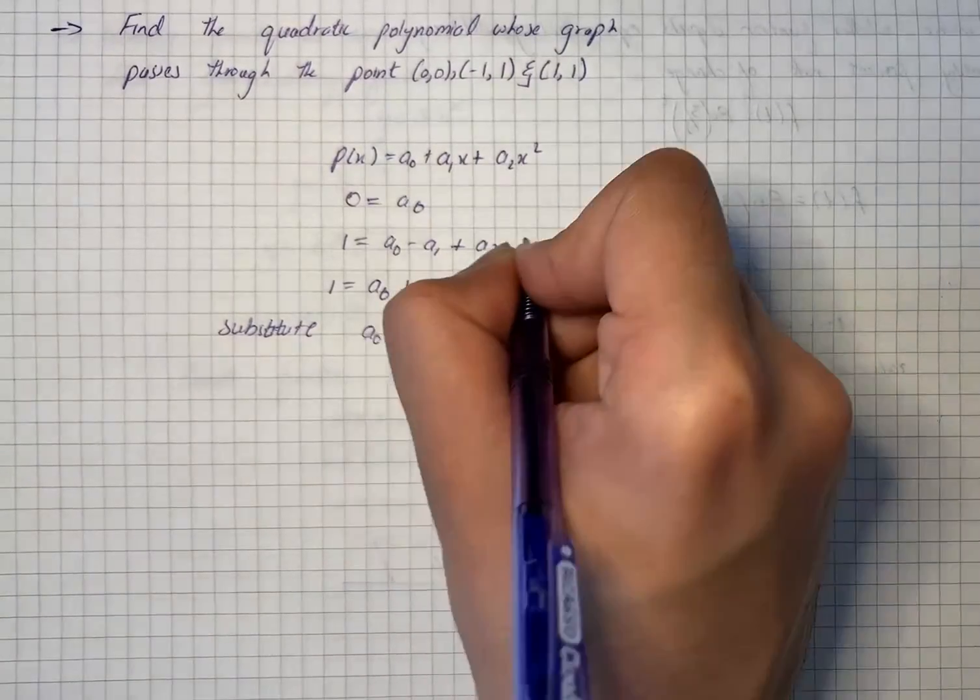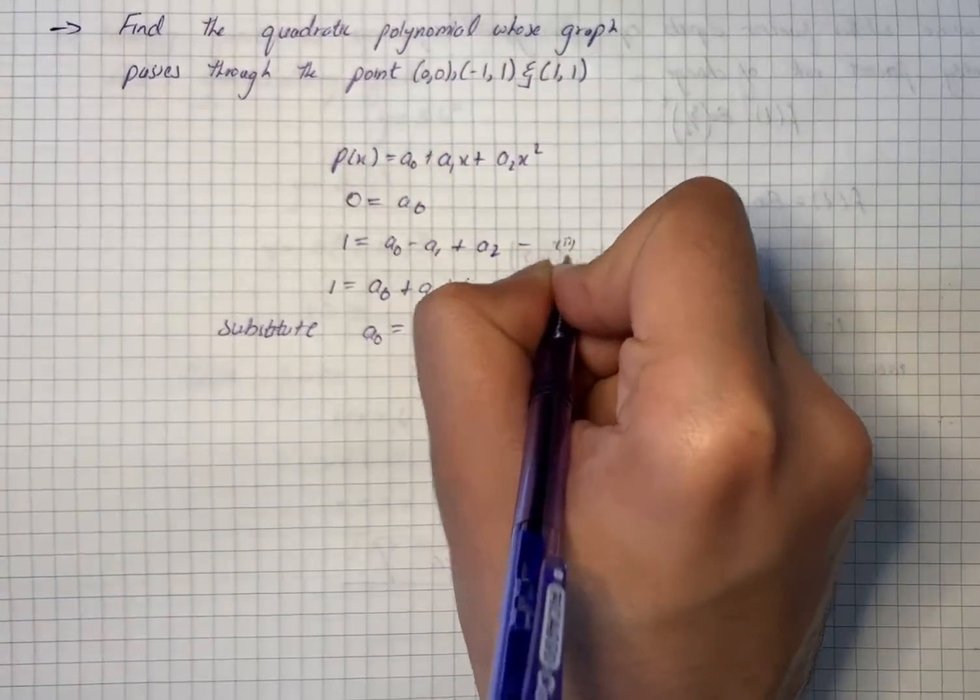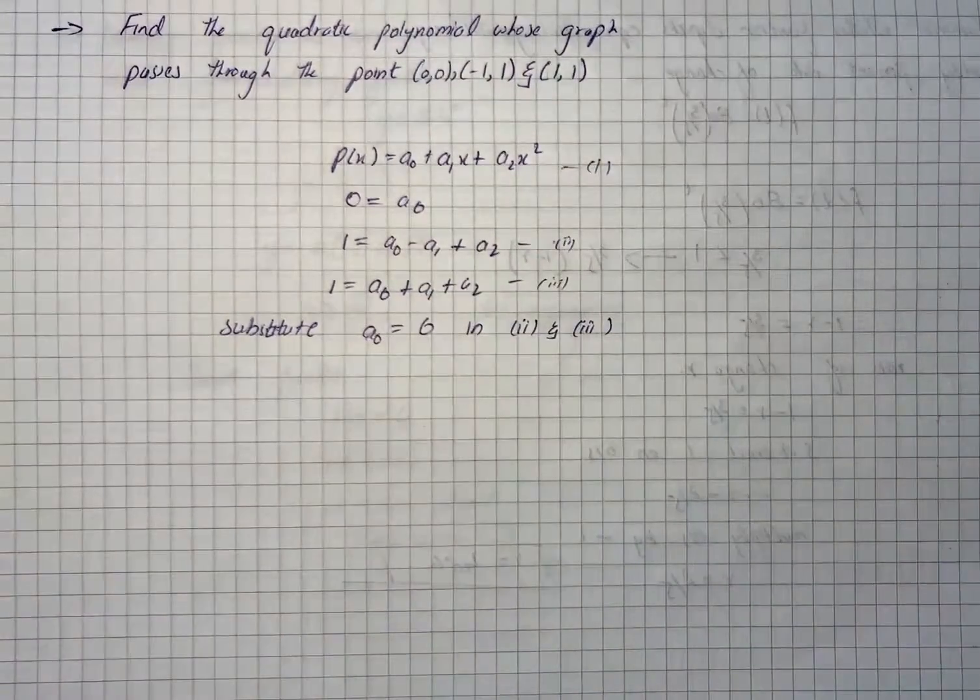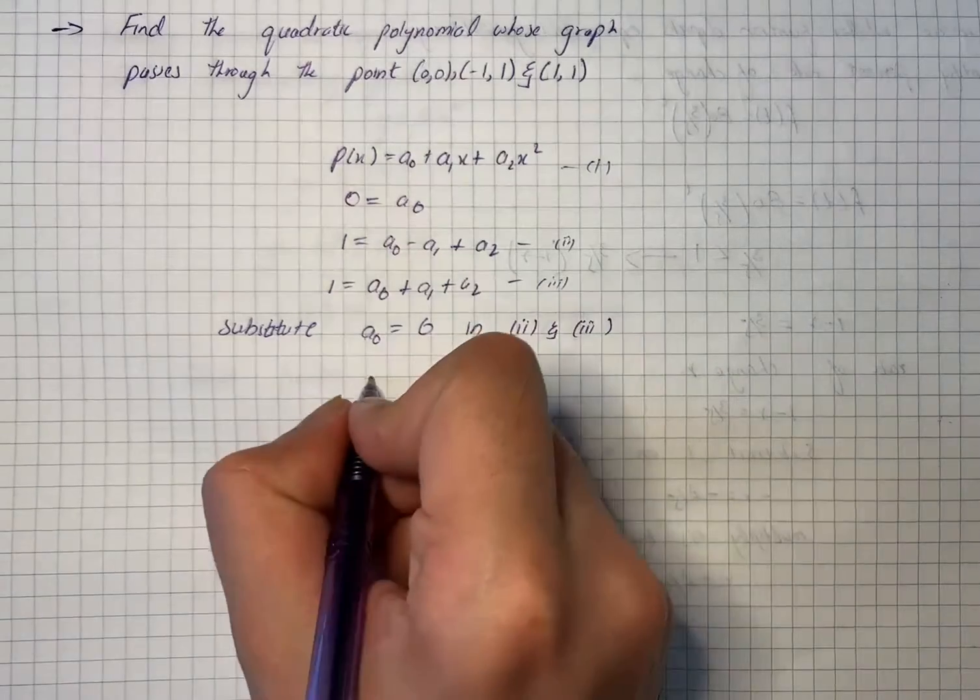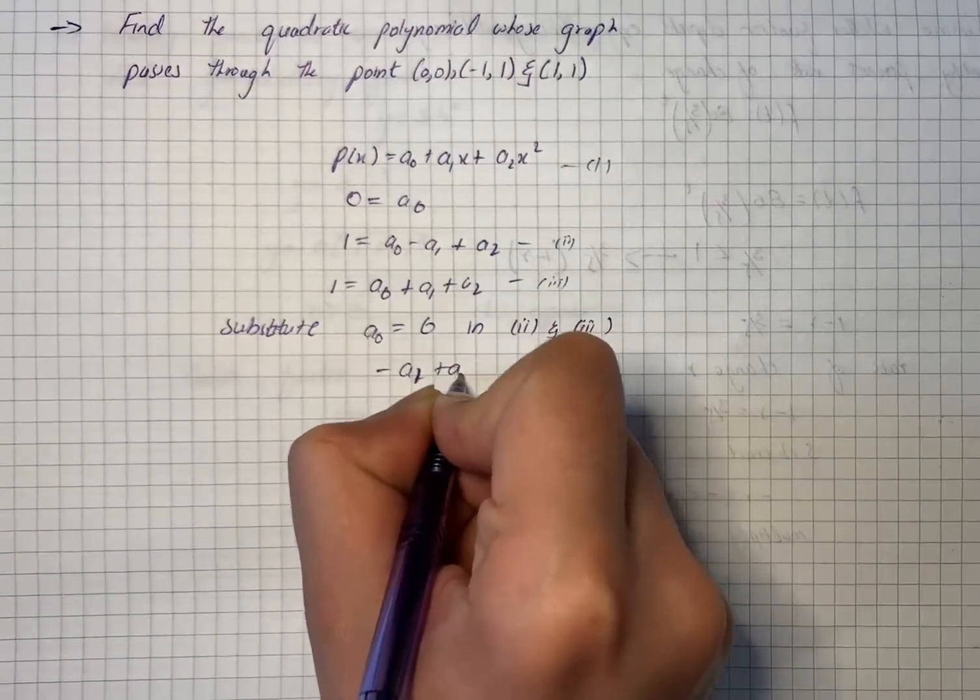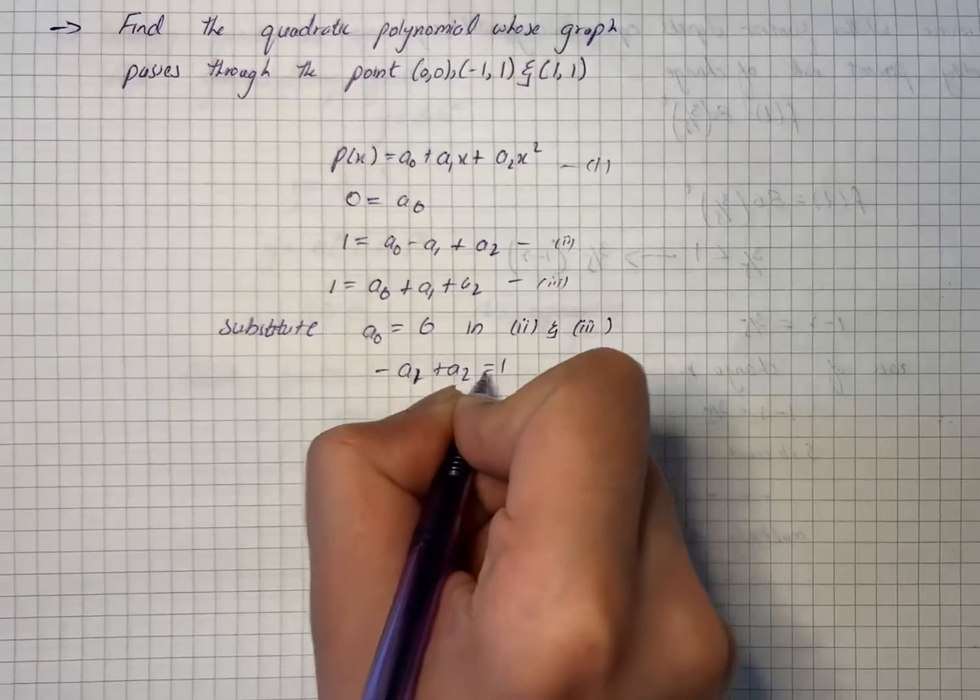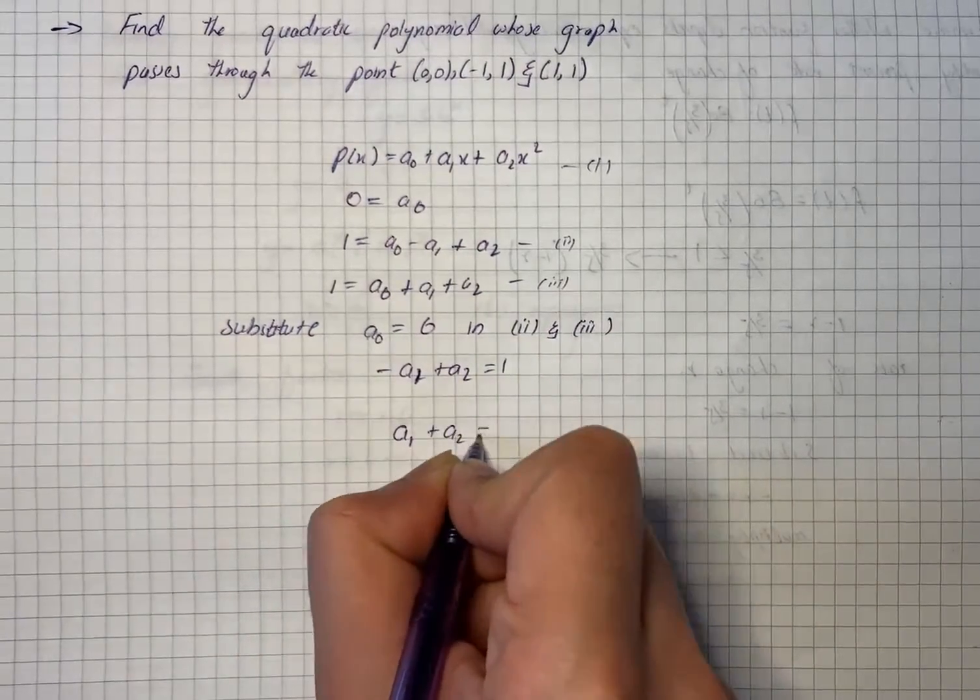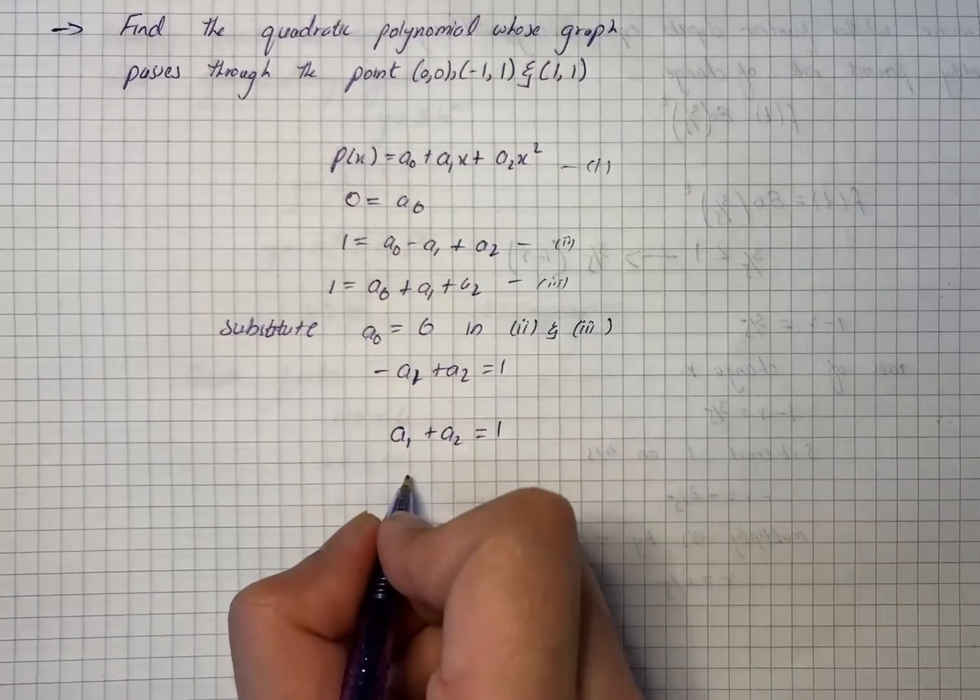Substitute a0 equals 0 in the second and third equation. This is the second equation and this is the third. So we have minus a1 plus a2 equals 1.